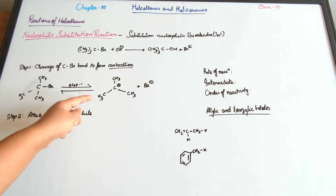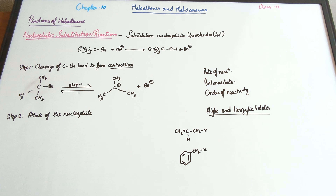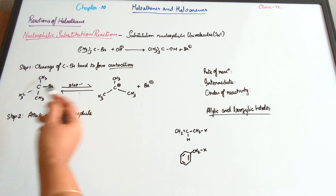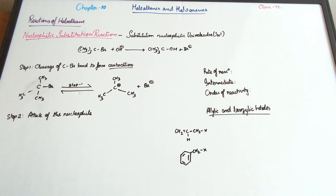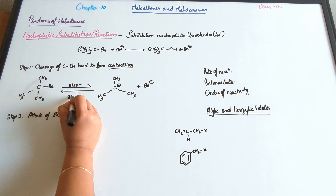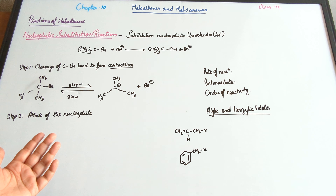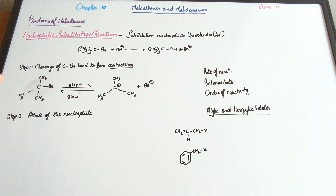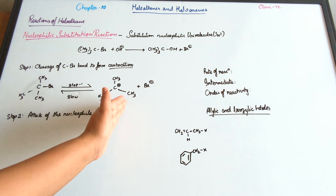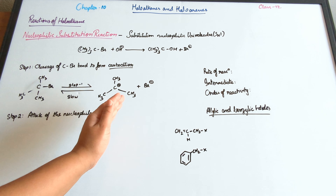We also get a Br⁻. Notice there is a two-headed (equilibrium) arrow, which means it is easy for this to go back to form the alkyl halide. The second thing is that this is a slow step, and from chemical kinetics, the slow step is always the rate-determining step because it takes the longest amount of time.